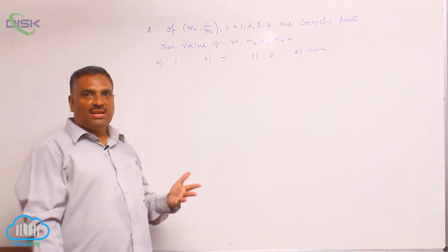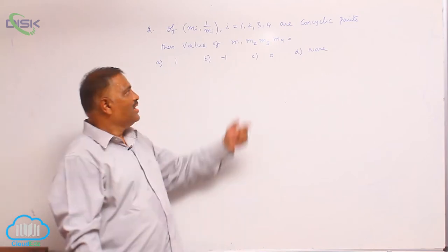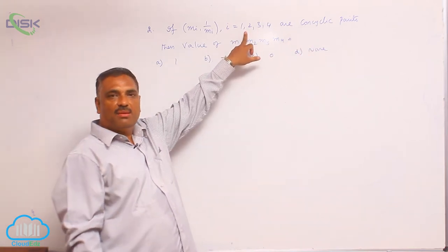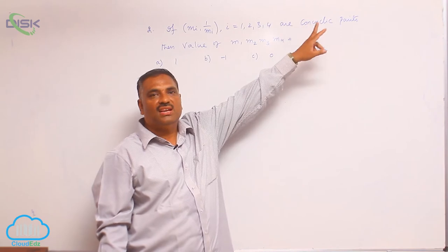What is the meaning of concyclic points already we discussed it. If all the points lie on the circle, there are four points here, they lie on the same circle means they are called concyclic points.